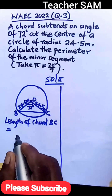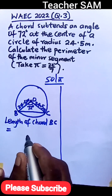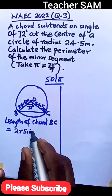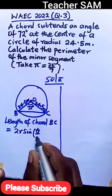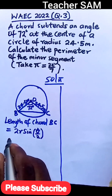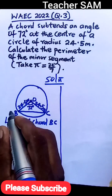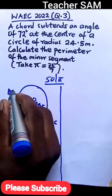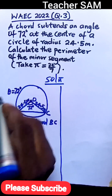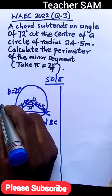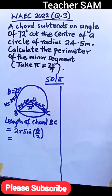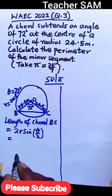You will recall that the formula for the length of a chord is equal to 2R sine(θ/2). In this equation, our theta is equal to 72 degrees, and our radius R is equal to 24.5 meters. So let's substitute those values.